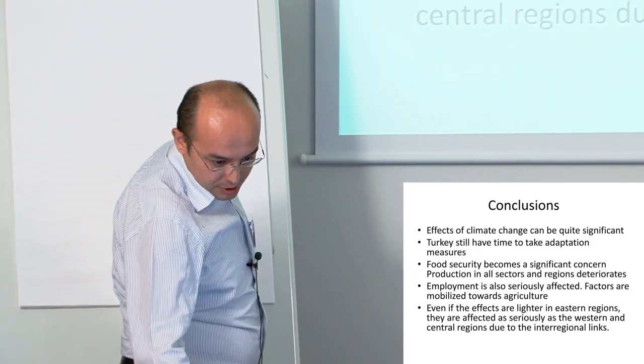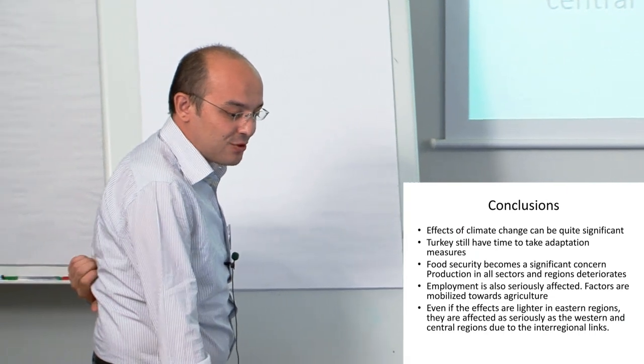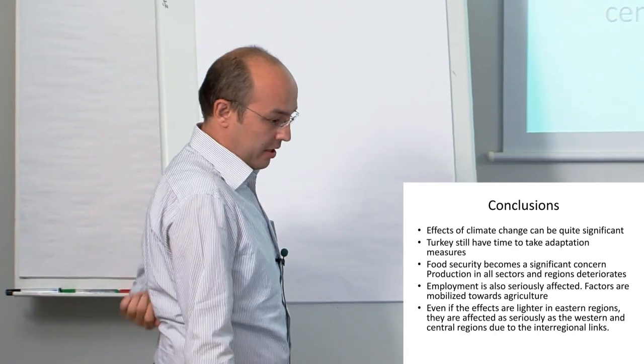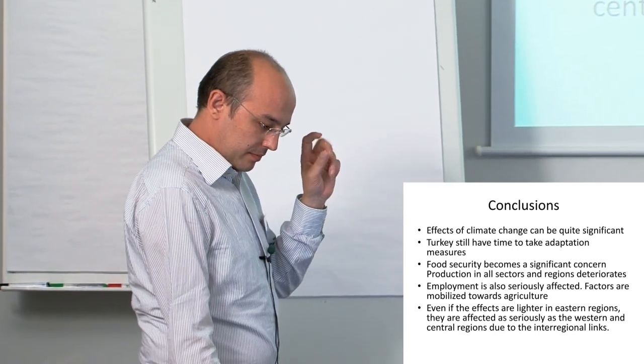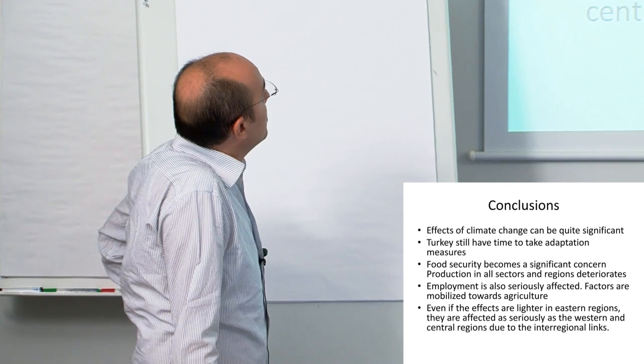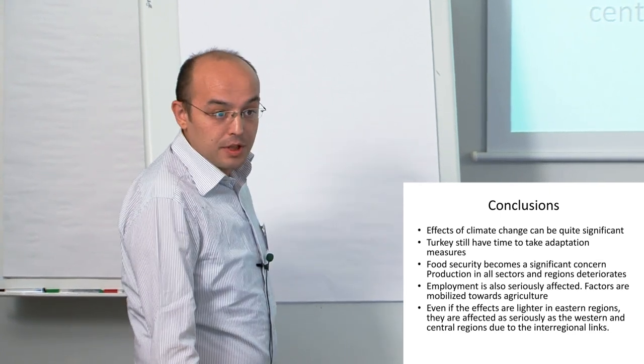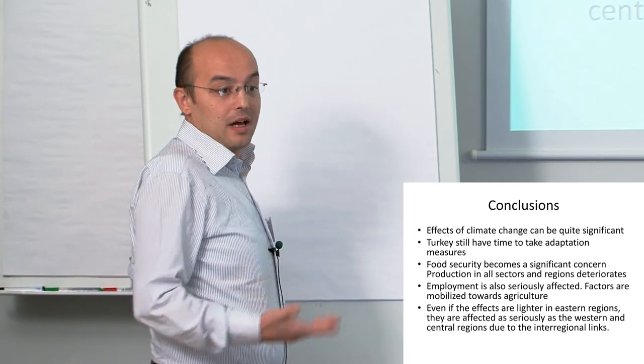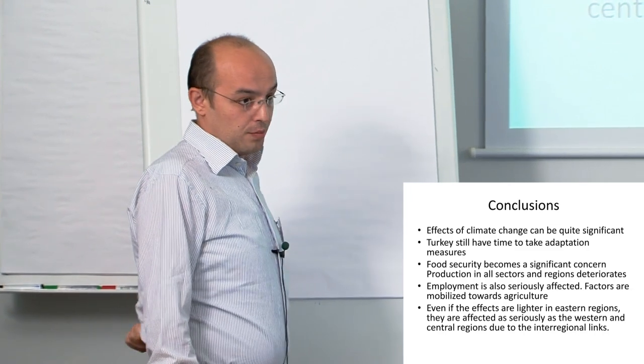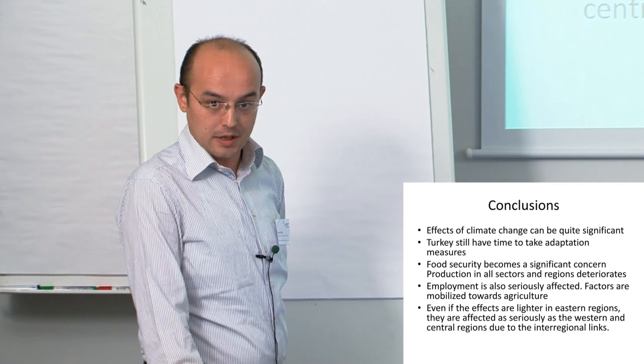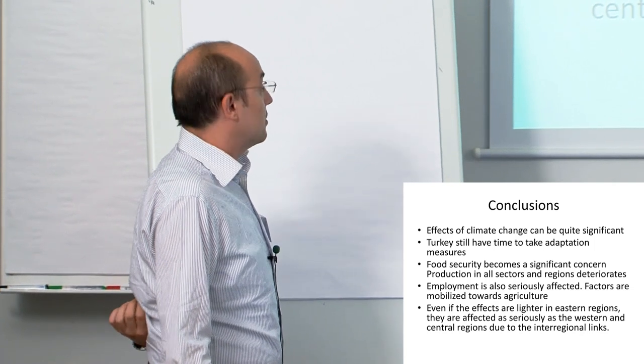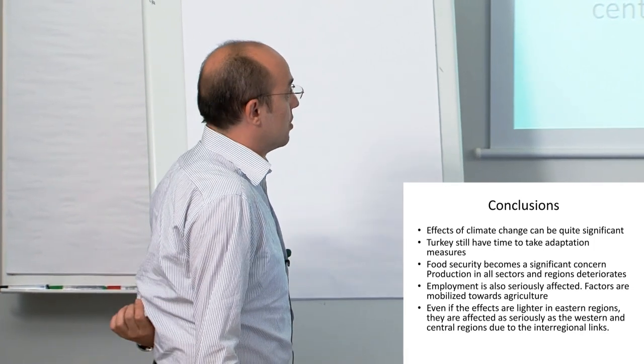My main conclusions are that the effects of climate change can be quite significant, though there's high margin of risk. Turkey still has time to take adaptation measures, at least up to 2030s, if the Hadley model is correct. Food security becomes a significant concern because food production is affected as much as agriculture. Employment is also seriously affected. Factors are mobilized towards agriculture.